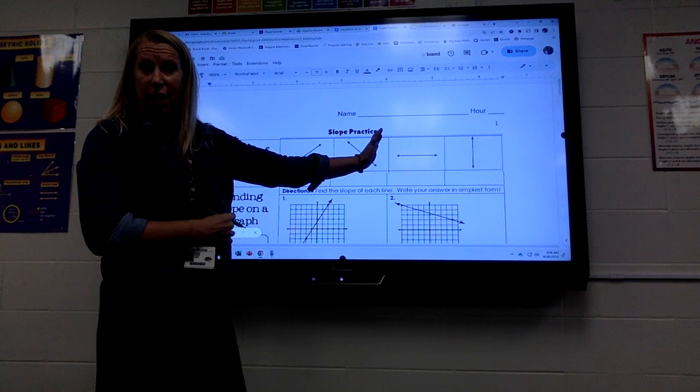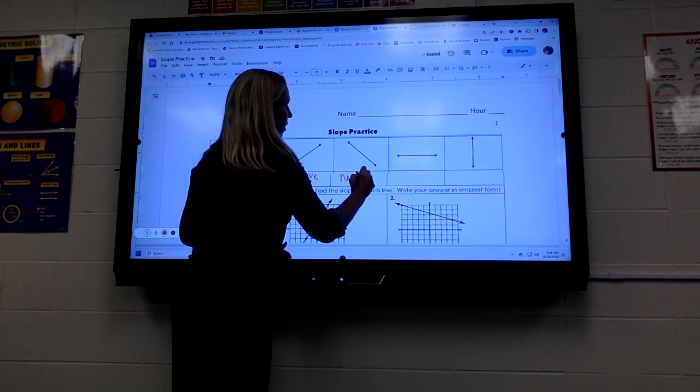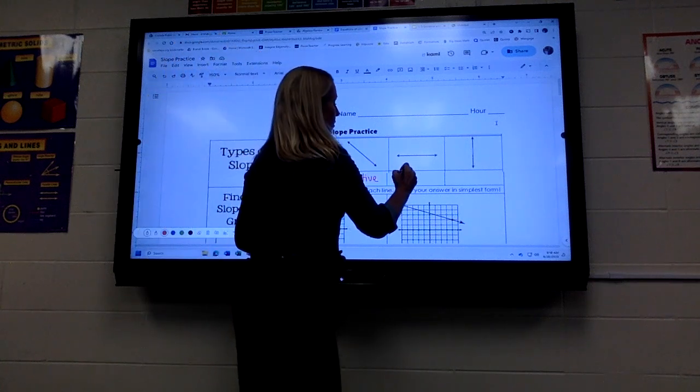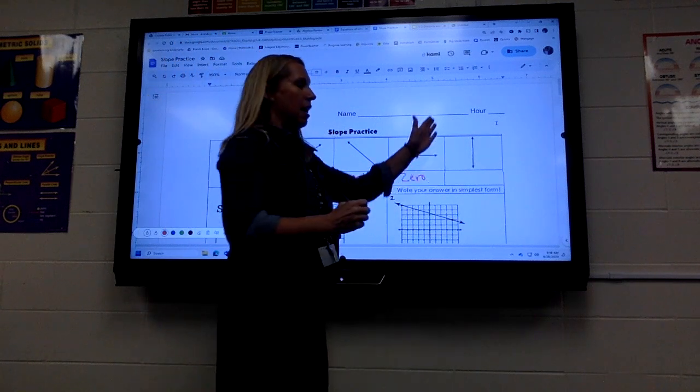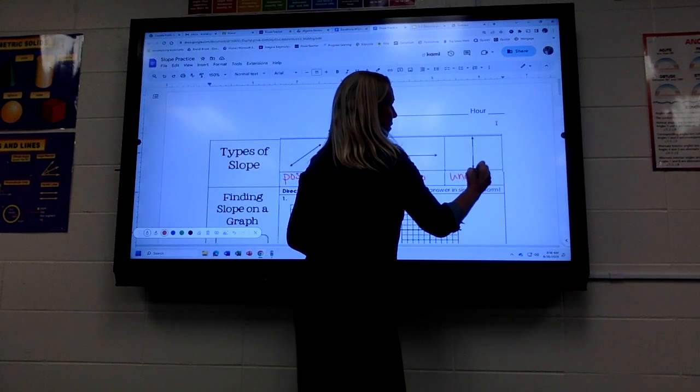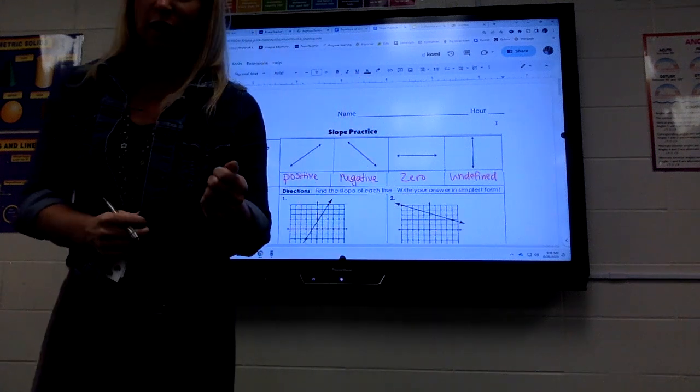If we read from left to right, if it's going down, it would be negative. A flat straight line is a zero slope, and then the vertical line is an undefined slope. So that's just a reminder, and you will need to know that for your quiz.